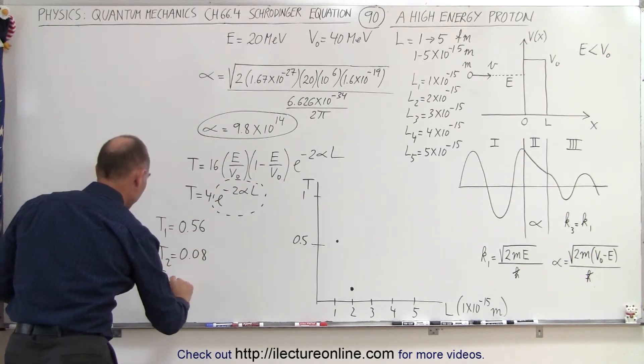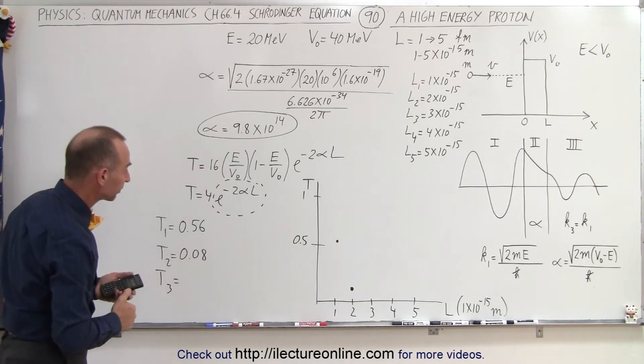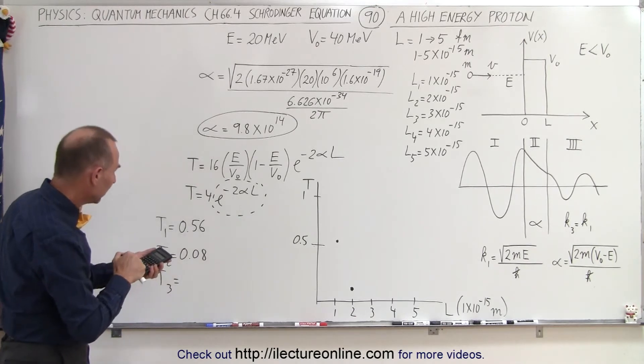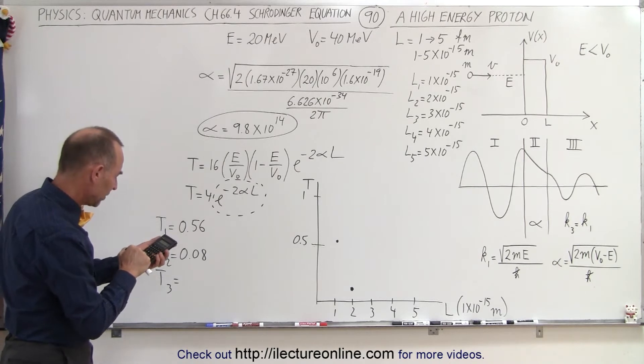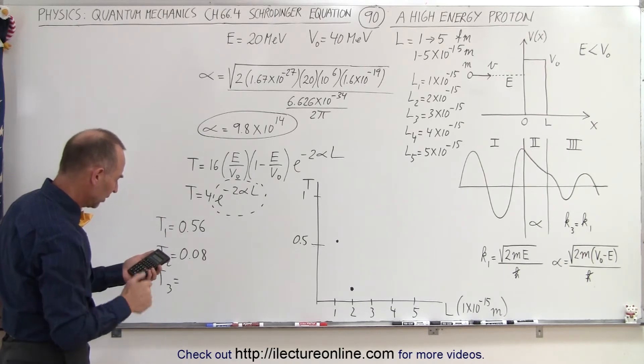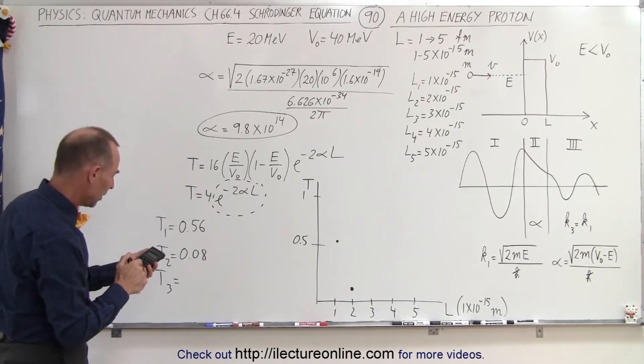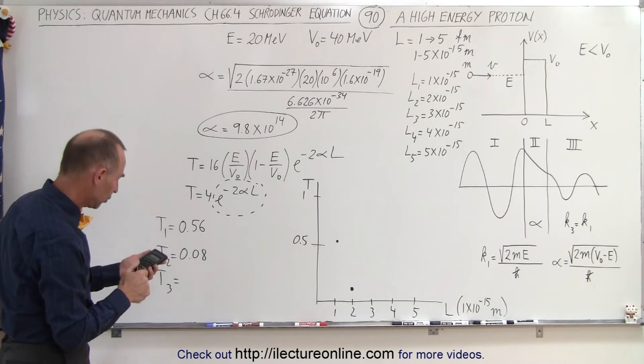Now, what about T3? All right, well in that case, we have 9.8 e to the 14th times 3 e to the 15th minus times 2. Put a negative in front of that, and get the exponent. And so now our probability is actually quite small. Multiply that times 4.